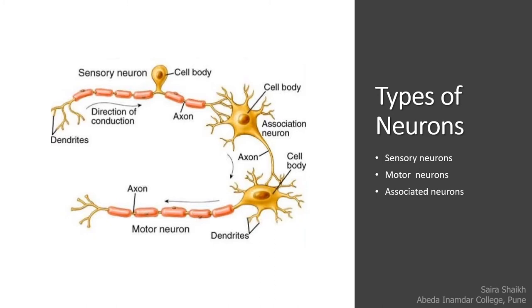Neurons are also classified on the basis of function: sensory neuron, motor neuron, and associated neuron. Sensory neuron carries the impulse from sense organs towards the central nervous system. Motor neurons are present in the brain or central nervous system and carry the impulse towards the body, muscles, or glands. The associated neuron is present between the sensory and motor neuron, connecting them and acting as a mediator — it carries the impulse from the sensory neuron and conveys it towards the motor neuron.